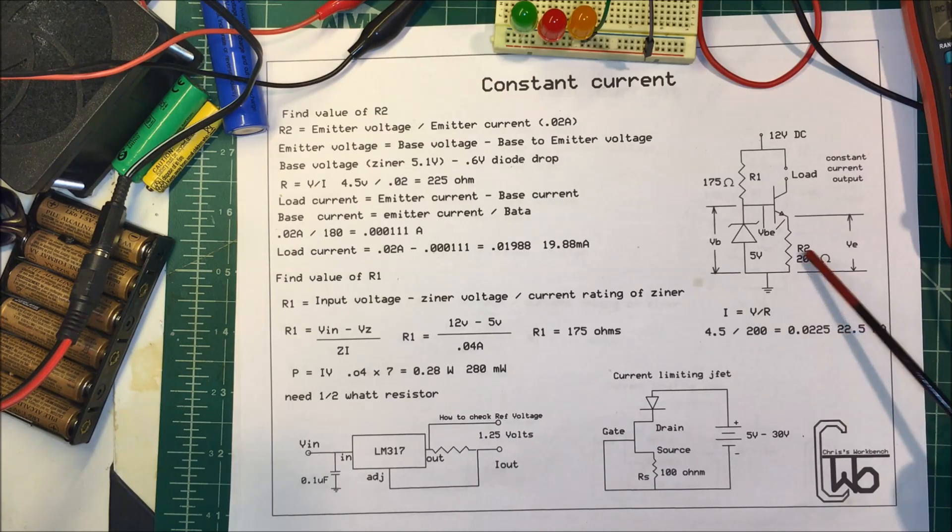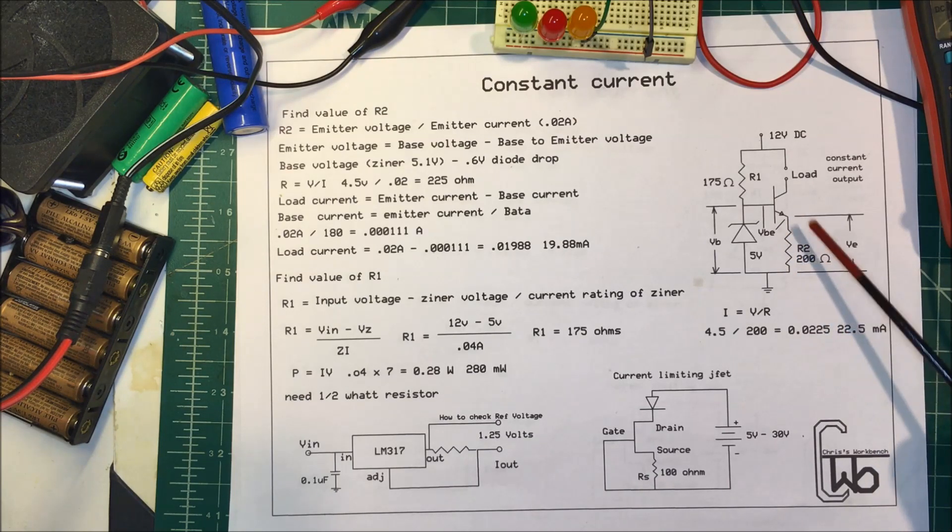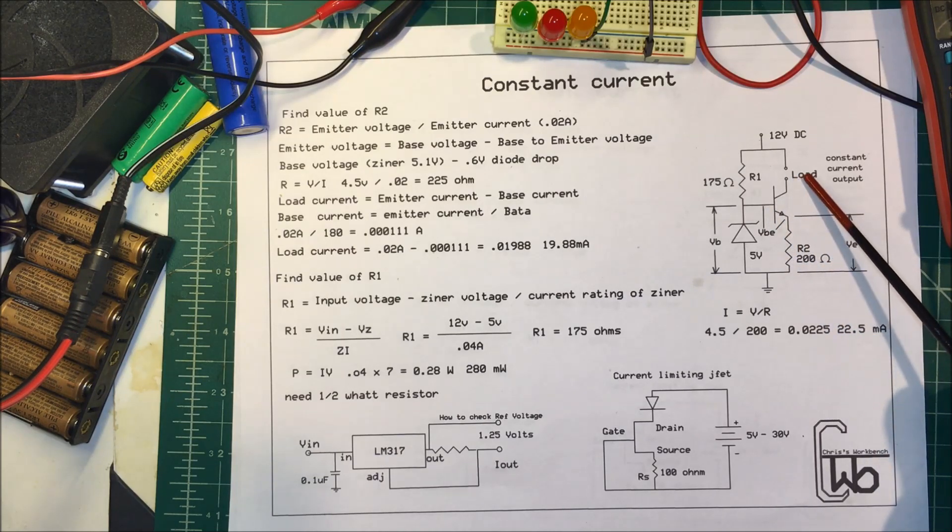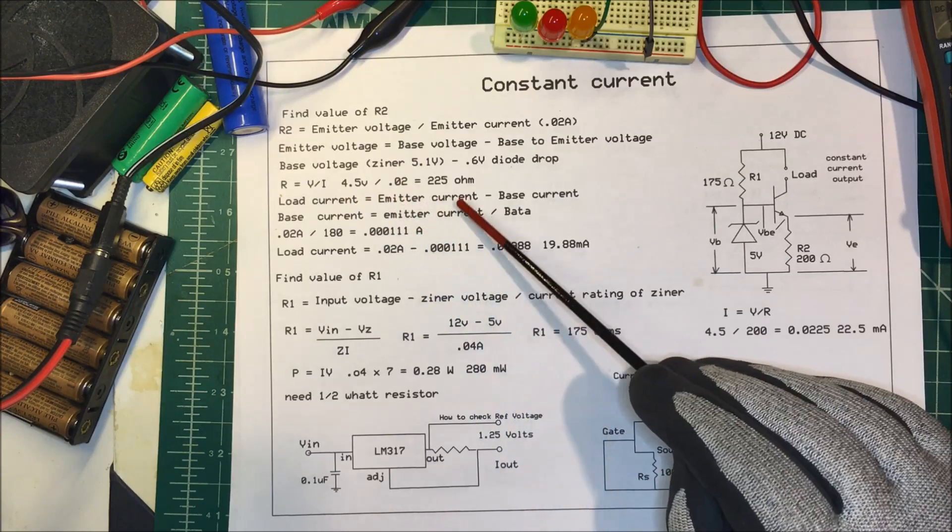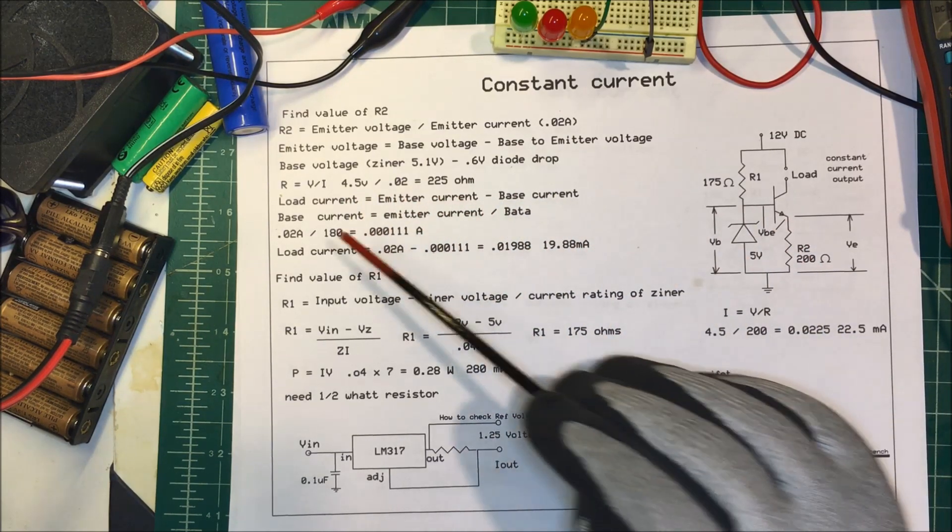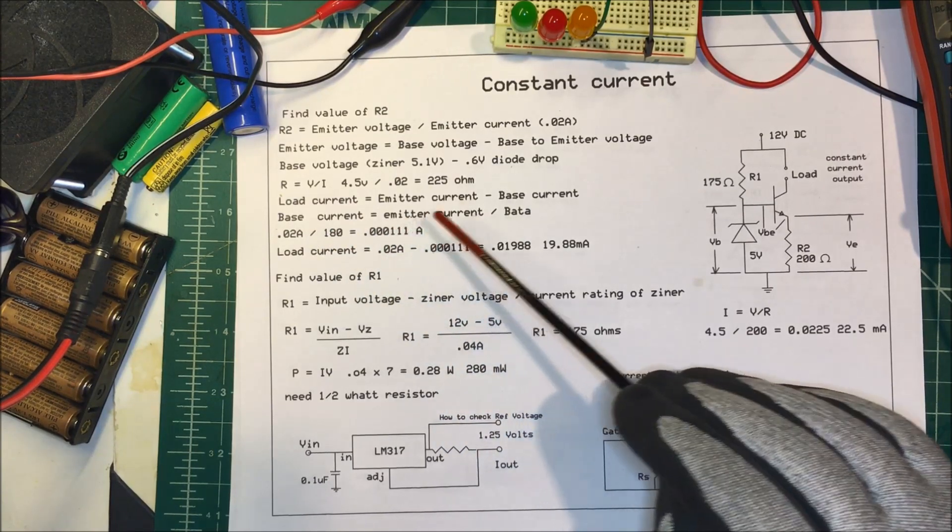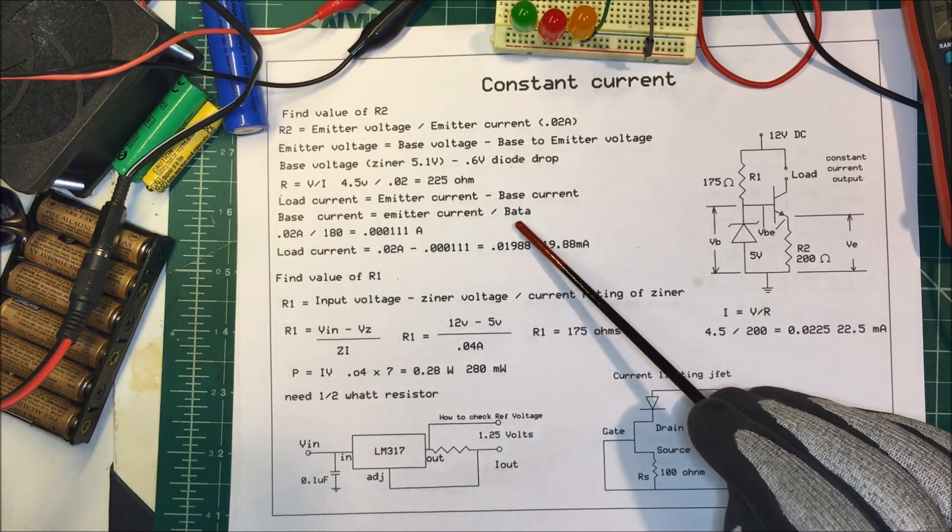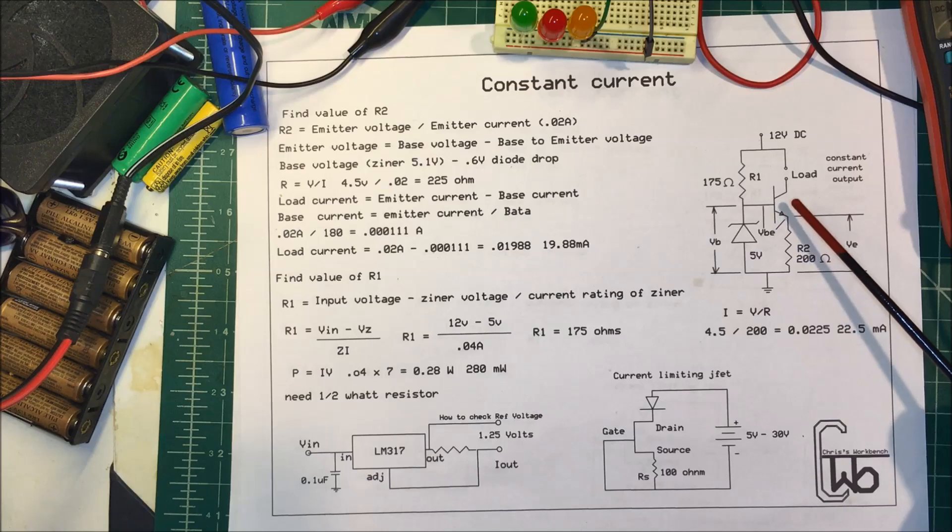The load current is going to be a little bit different. The load current equals the emitter current minus the base current. We're adding some current through the base, so the base current equals the emitter current divided by the beta of the transistor. This happens to be about 180.